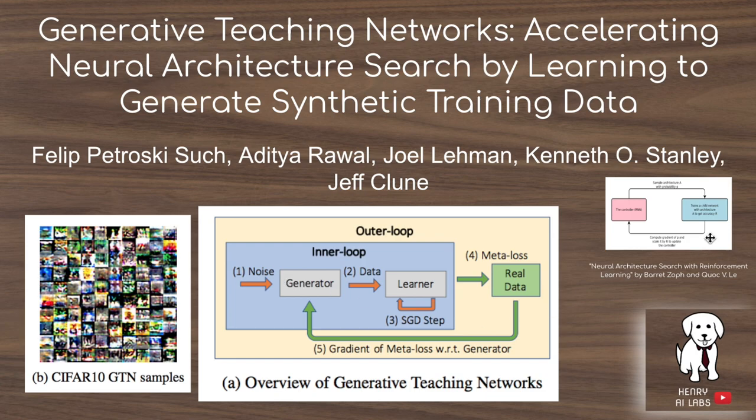In neural architecture search, there's this bottleneck where you propose neural architectures in the search algorithm, but then you need to train these child networks on the original dataset. The idea here is that datasets from generative teaching networks are optimized so you can train these child networks as fast as possible, allowing you to iterate on neural architecture search more times and search through more architectures to find the best one.